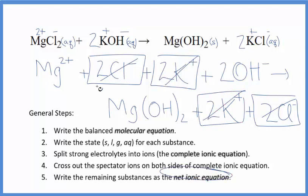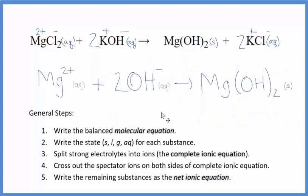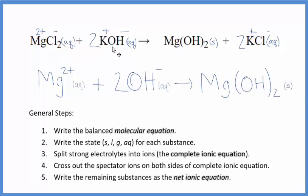What's left is the net ionic equation for MgCl2 plus KOH. After cleaning this up and adding states, we have our balanced net ionic equation for magnesium chloride plus potassium hydroxide. You'll note that charge is conserved — I have a 2+, and I have 2 times 1−, giving a net charge of zero on the reactant side. This is a neutral compound with net charge of zero on the product side, and the atoms are balanced as well. This is Dr. B with the balanced net ionic equation for MgCl2 plus KOH.